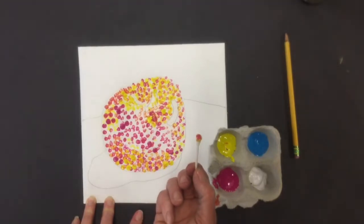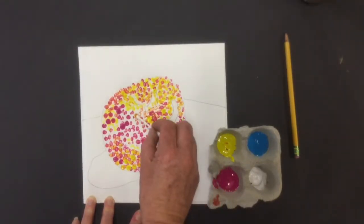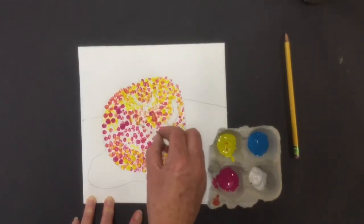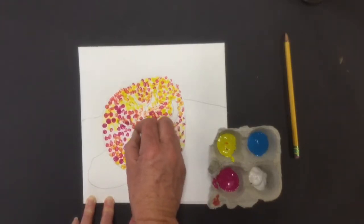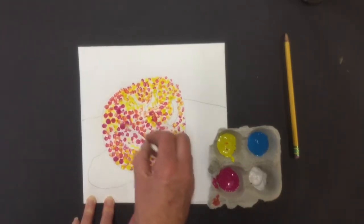And like here, my magenta was still pretty wet. So see how it picked up on my q-tip. That's okay, I'm just going to go with it. It's making kind of a reddish orange color, which is fine. And I'm going to fill that in.